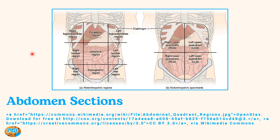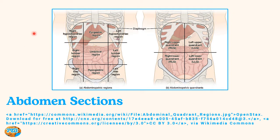The right iliac region is named after the ilium — this bone here, which is part of the pelvis — so the right iliac region is in the area where the ilium is. Then we have the left iliac region and the right and left lumbar regions. The spinal cord is divided into sections, and the lumbar section is in this area. Another way to remember it is that the curves of the abdomen are more prominent in the middle, so you're closer to the back, or the lumbar region, in those sections.